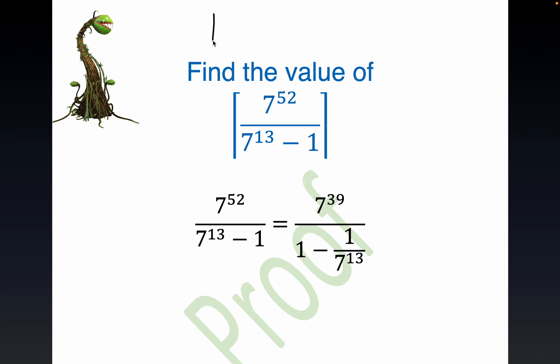Briefly review the ceiling function. This is sometimes called the least integer function. Let's look at a few examples. Let's say 5.8, the ceiling of 5.8. It's defined to be the least integer that's greater than the input argument. So that would be 6 in this case.